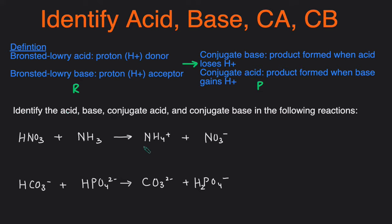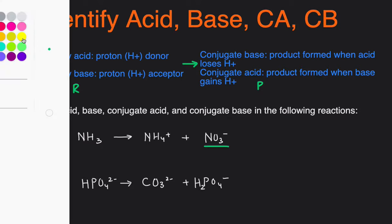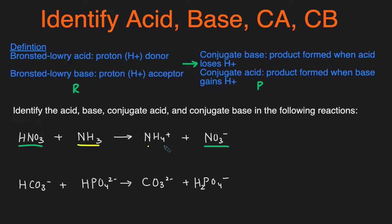The very first step that you should do is you should just pair up the species that look the most similar on the reactant and product side. So HNO3 looks most similar to NO3-. We'll put them in a pair, and then we'll also put NH3 and NH4+ in a pair because they're similar.